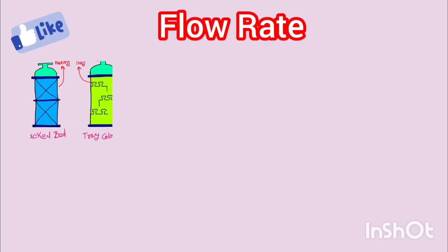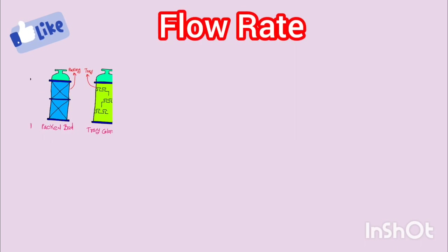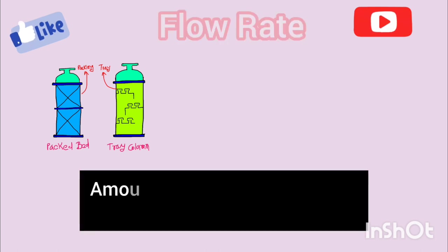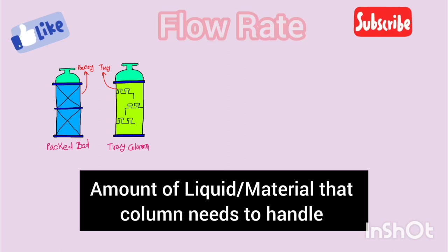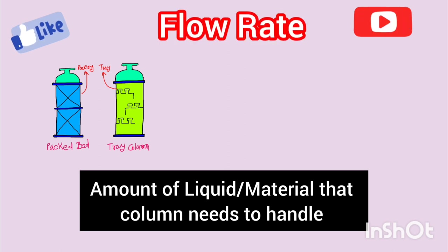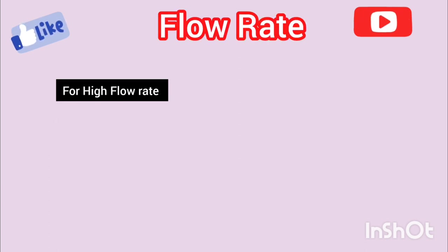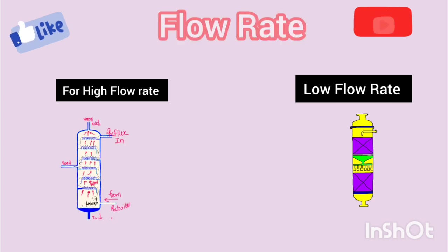The first parameter is flow rate. It's all about understanding the amount of material that needs to be processed in your column. Tray columns are highly versatile and capable of handling a wide range of gas and liquid flow rates, making them ideal for applications with varying flow rates. So, if flow rate is high, we have to use tray column, and if flow rate is low, then we can use backbed column.